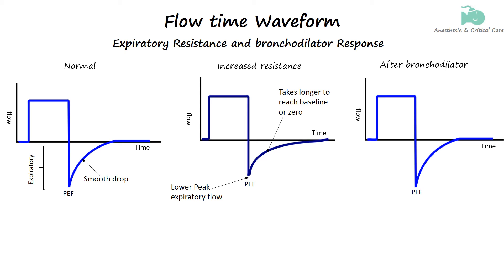The expiratory portion of the flow-time waveform may appear concave or scooped out due to the increased resistance, especially in conditions like chronic obstructive pulmonary disease. If the expiration is cut short due to short expiratory time, then there will be air trapping or auto-PEEP that we discussed earlier.